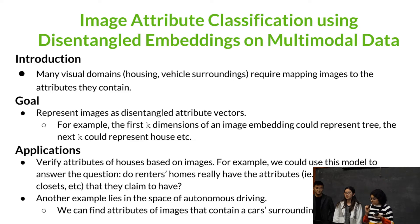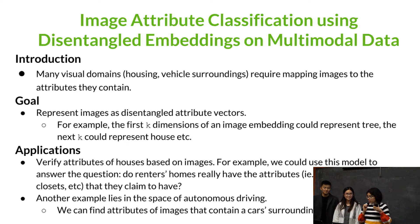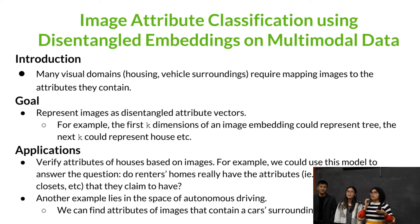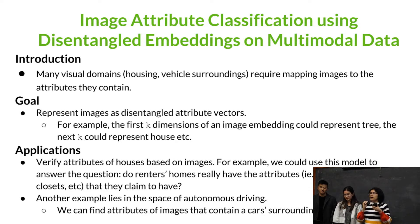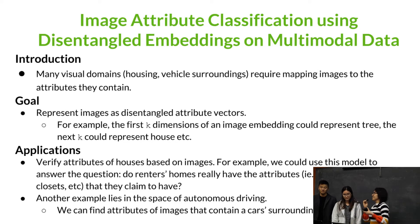Our goal is to represent images as disentangled attribute vectors where the first K dimensions represent the hardwood floors, the second K dimensions represent the fireplace, etc. These disentangled representations can be very useful for interpretability and can also yield robust learning.